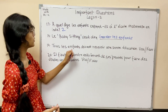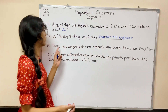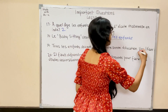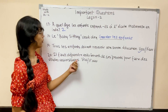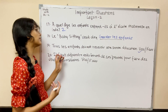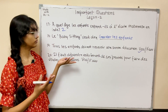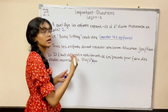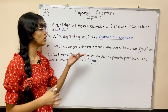Question 19: Tous les enfants doivent recevoir une bonne éducation — all children must receive good education. True or false? That's definitely true. Question 20: Il faut dépendre entièrement de ses parents pour faire des études universitaires — we must entirely depend on our parents for university education. That is false. We should look for scholarships from the government or work part-time.